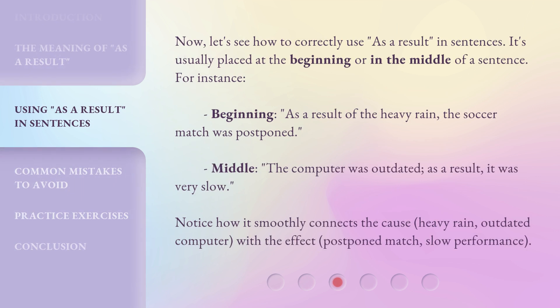Now, let's see how to correctly use 'as a result' in sentences. It's usually placed at the beginning or in the middle of a sentence. For instance, at the beginning: 'As a result of the heavy rain, the soccer match was postponed.' In the middle: 'The computer was outdated. As a result, it was very slow.' Notice how it smoothly connects the cause — heavy rain, outdated computer — with the effect — postponed match, slow performance.